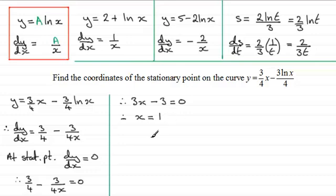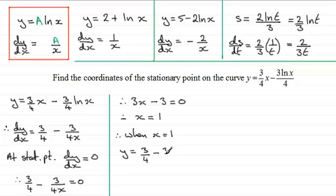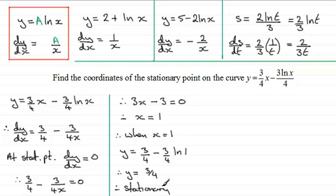Now we need to find the y-coordinate. When x equals 1, y equals three quarters times 1, which is three quarters, minus three quarters times the natural log of 1. The natural log of 1 is 0, so y equals three quarters. Therefore the stationary point has coordinates x equals 1 and y equals three quarters.